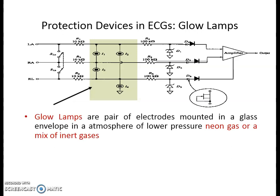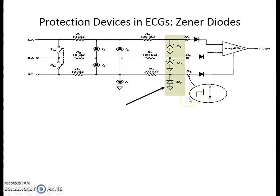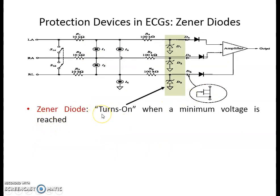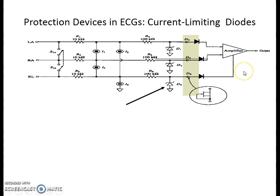The first mechanism is glow lamps — they are generally a pair of electrodes mounted in a glass envelope in an atmosphere of lower pressure neon gas or a mix of inert gases. Typically the impedance across the electrodes is high, but whenever the voltage across the electrodes exceeds the ionization potential of the gas, this impedance suddenly drops and is shorted to ground. So the majority of the current safely goes to ground and avoids the amplifiers. The second mechanism is the Zener diode. These diodes turn on when a minimum voltage is reached, and we use the Zener as a voltage regulator. If a large voltage is applied — as in the case of a defibrillator — the Zener diode allows current to flow through it and shunts it to ground, so current goes to ground and not to the amplifier.